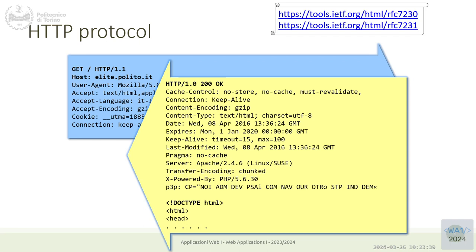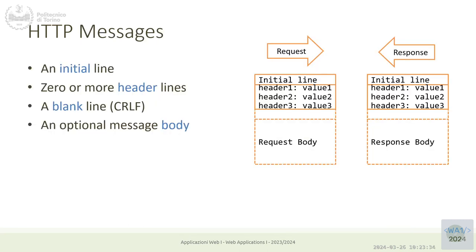HTTP is just a small block of text — the HTTP request — and a larger block of text that we call the HTTP response. Both the request and the response are composed by three parts: a first line, a header, and a body. The first line of the request is the command — the verb — the action that we are requiring. The first line of the response is the status: did the operation go well or not? Then we may have one or more headers in the request and response, and possibly a body containing data.